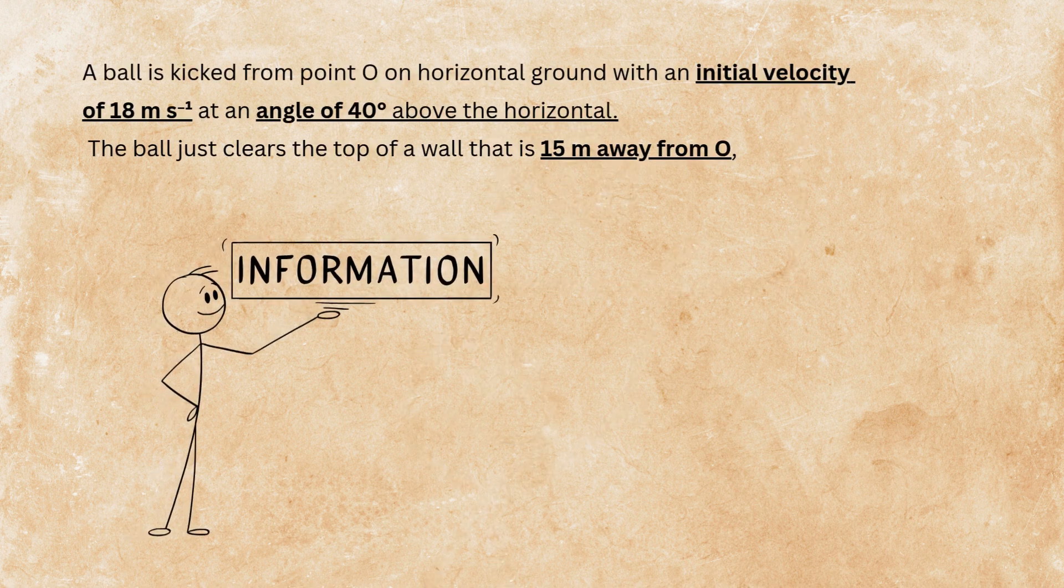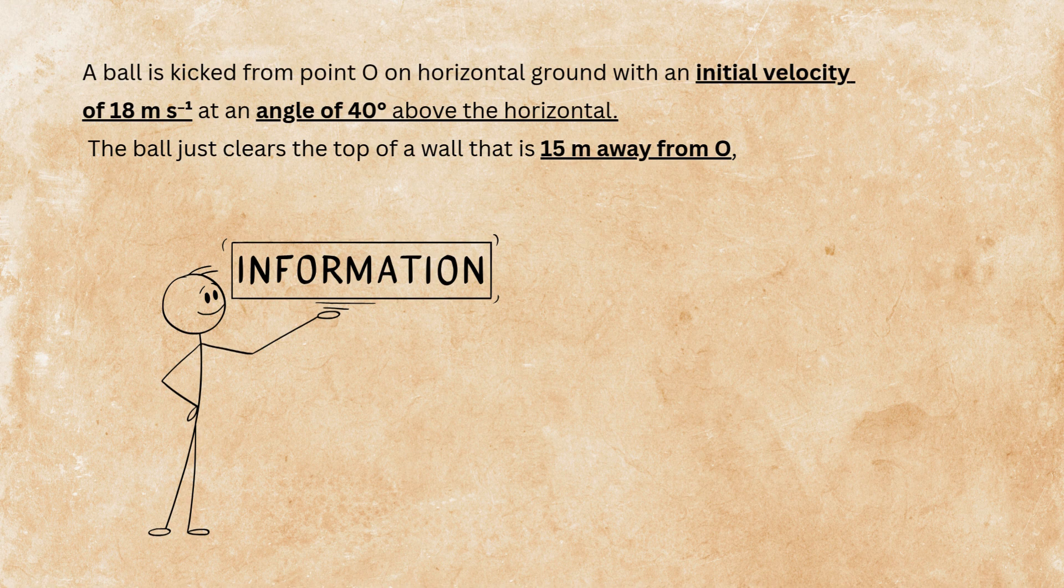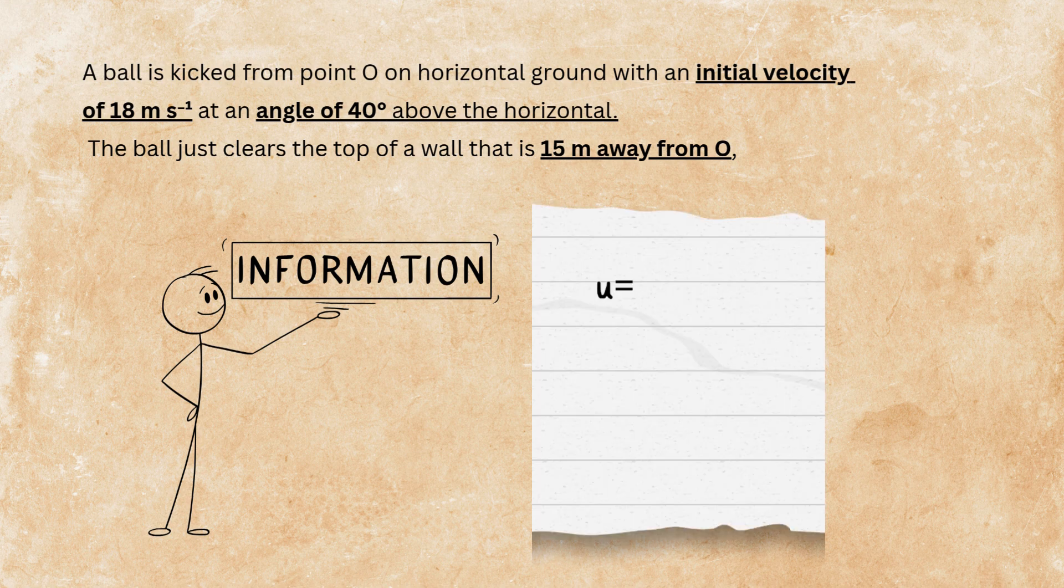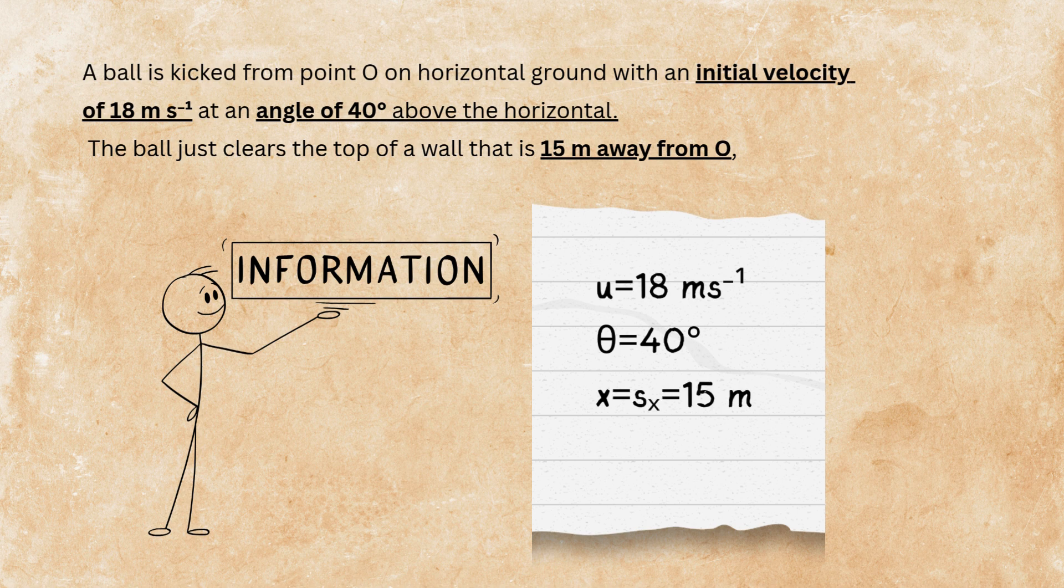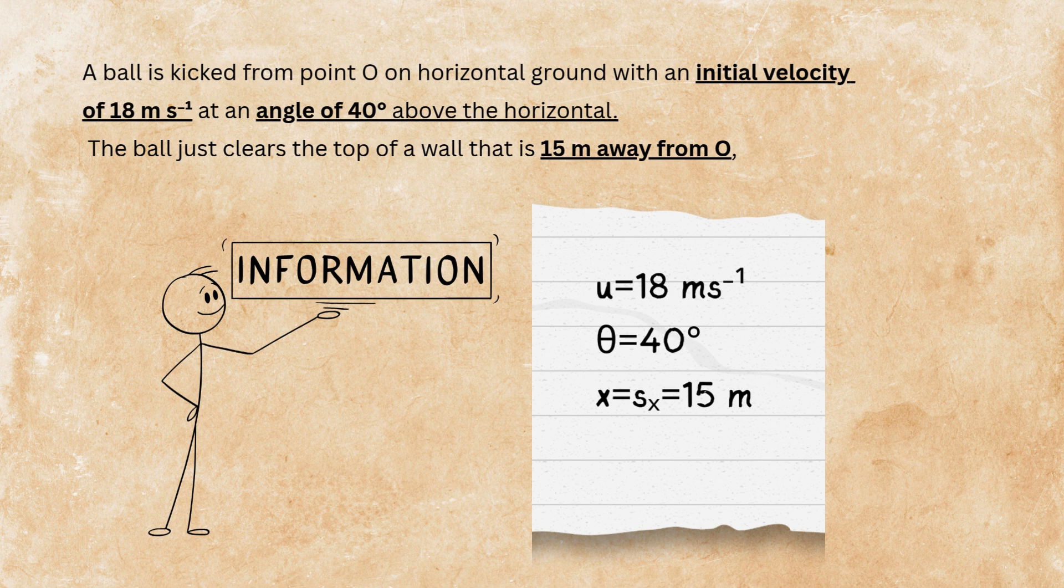When you read a question, pay attention to the numbers and information the question gives you. It's an initial velocity of 18 meters per second, and we show it with U. The angle is 40 degrees above horizontal, we usually show that with theta. And 15 meters away from O, which was horizontal distance. So, X or SX is 15 meters.